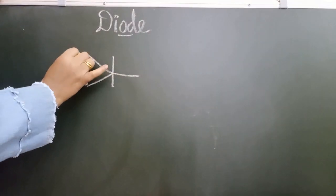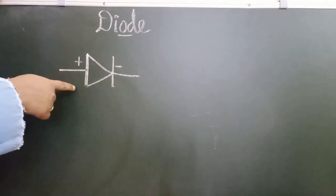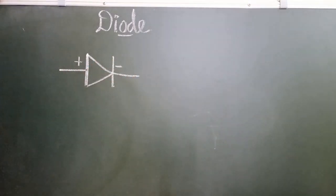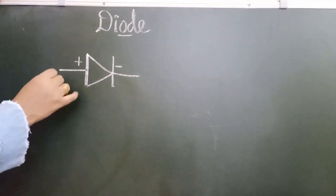This is the symbol of diode. It has a positive terminal and a negative terminal. It only works under the condition of forward bias. How we give forward bias to this diode is by simply connecting a battery...